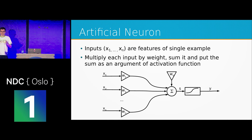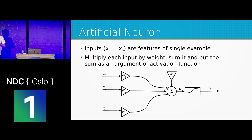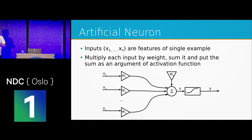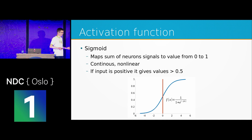This intuition was used to build an artificial neuron. We have inputs — X numbers, which are real numbers from your data — and weights, also real numbers. You multiply each input by its corresponding weight, sum it all up, put the sum into an activation function, and the result is the single real number output of your neuron. One popular activation function is the sigmoid, which maps your sum to a value from zero to one. It's continuous and nonlinear, meaning the input is not proportional to its output.